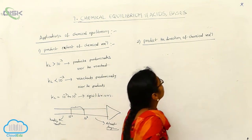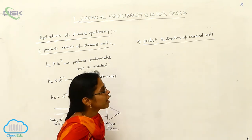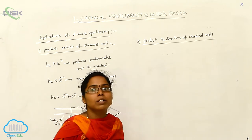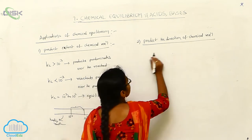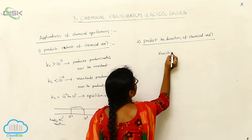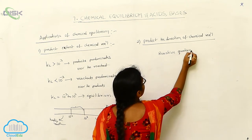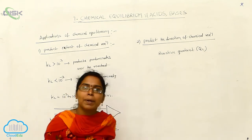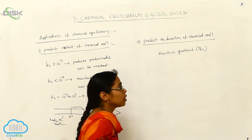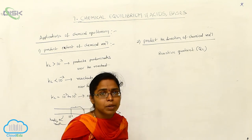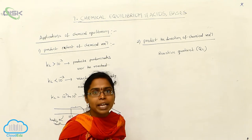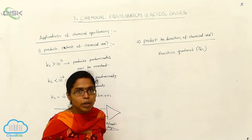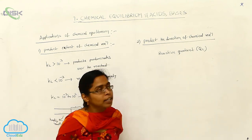Next, to predict the direction of chemical reaction — whether forward, backward, or equilibrium — we use the reaction quotient Qc. Qc has the same form as Kc, but Kc tells about the extent of reaction while Qc tells about the direction of the reaction.